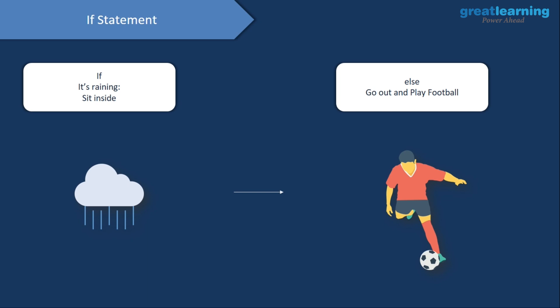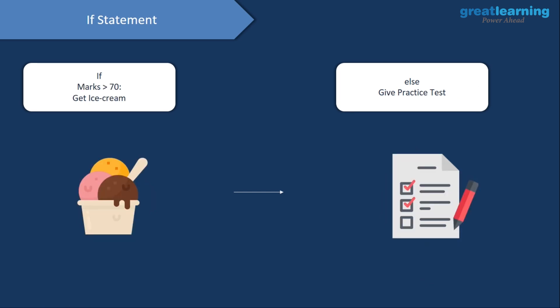We have a good example right in front of us. Let's say you would want to play football, but it's actually raining outside. So the condition over here is: if it's raining outside, then you can't play — you'd have to sit inside. On the other hand, if it's not raining, then you can go out and play football. This is a good example of an if-else statement.